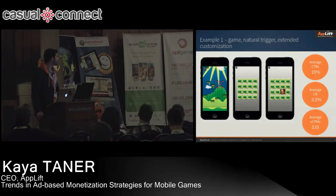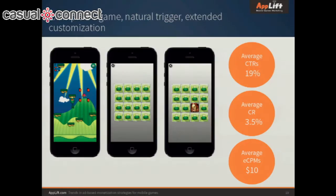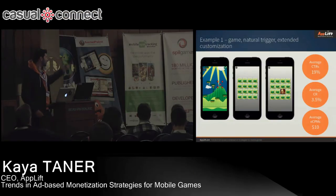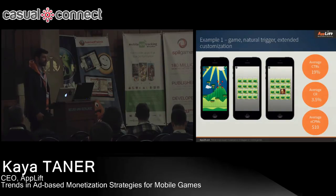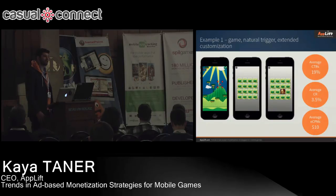Same game, but a different ad unit. Here we have a mini-game with user engagement where the user can actually play a memory game. Behind the little cards — which also use the game's character as a background — are apps being shown. If you match two cards, the ad triggers and you're redirected to the App Store. In this example we saw average click-through rates of 19%, average conversion rates of 3.5%, and average eCPMs of $10 — compared to roughly $3 to $5 for a normal interstitial or about $0.50 for a banner ad.